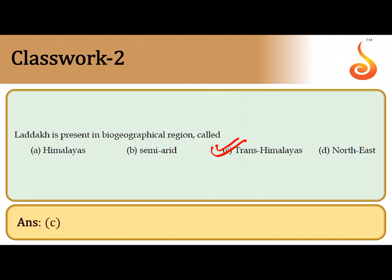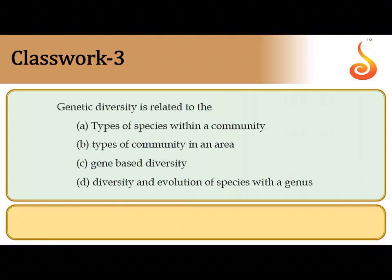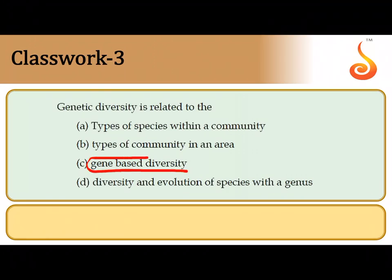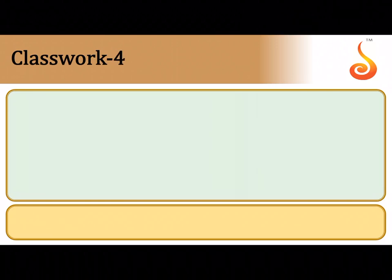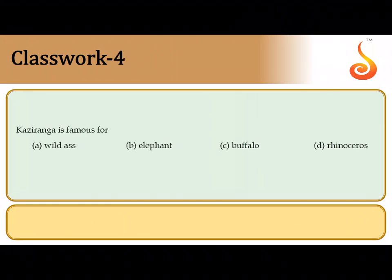The third question asks what genetic diversity relates to. Genetic diversity is the diversity that exists within members belonging to the same species, because not all of us are identical in our genetic constitution. So genetic diversity is entirely based on gene-related diversity. The fourth question: Kaziranga National Park of Assam is famous for the one-horned rhinoceros, so the answer is option D.